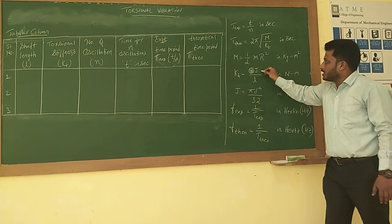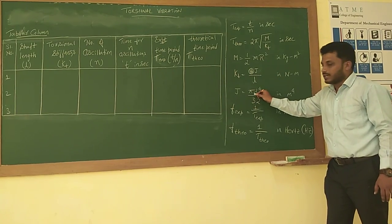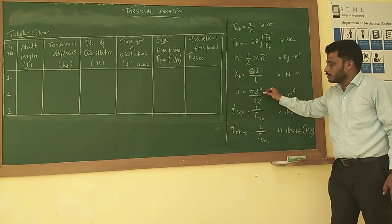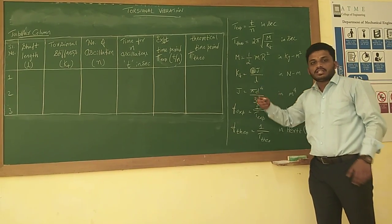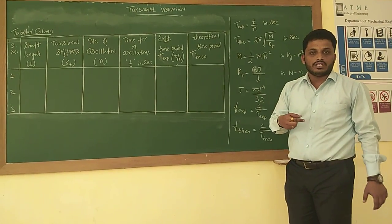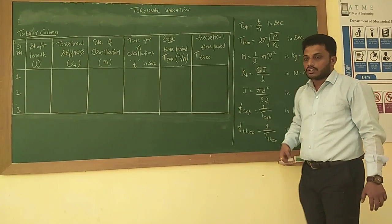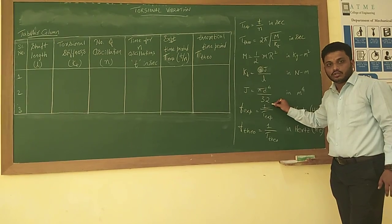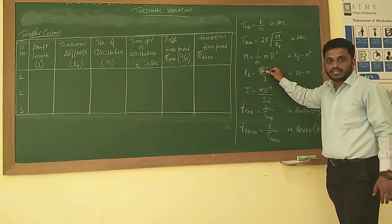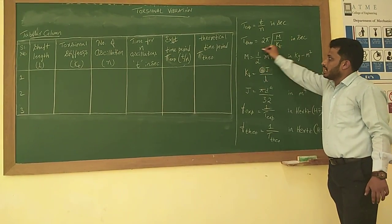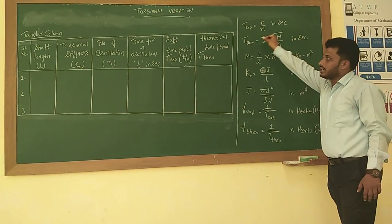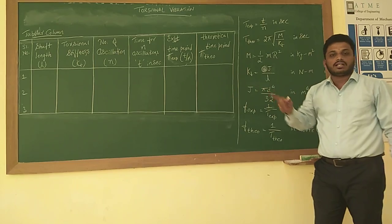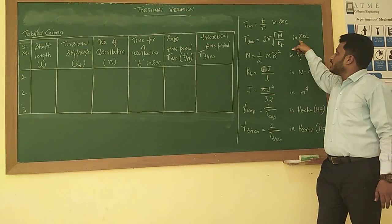The polar moment of inertia J is given by πd⁴/32. We use πd⁴/32 because the shaft is circular — the polar moment of a circular rod is πd⁴/32. This value is substituted to find kt, and with the value of m, we finally calculate the theoretical time period T_theoretical in seconds.